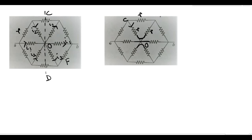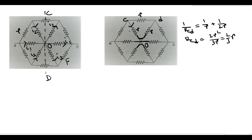Say this point is C and this point is D. Between C and D: 1/R_CD = 1/r + 1/2r, so R_CD = 2r²/3r = 2r/3. Between C and D the equivalent resistance is 2r/3. Similarly, between points E and F, one resistance is r and another is 2r in series, giving r + r = 2r in series with r, so R_EF = 2r/3 as well.